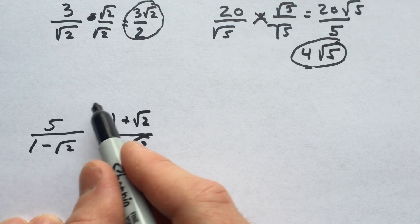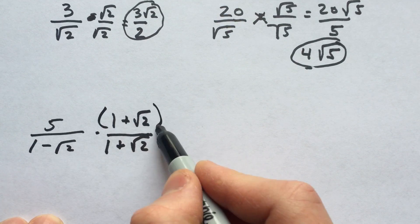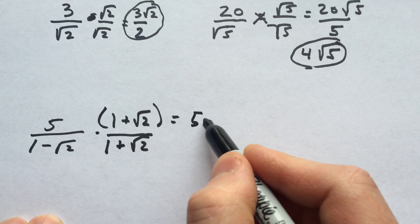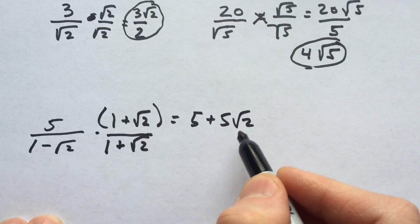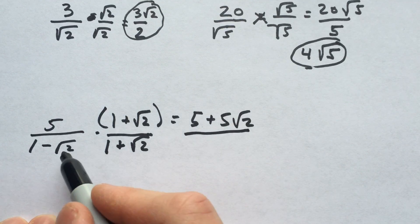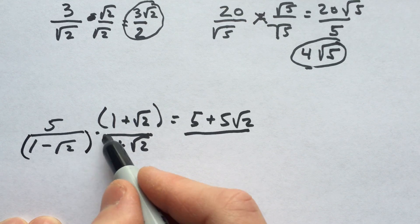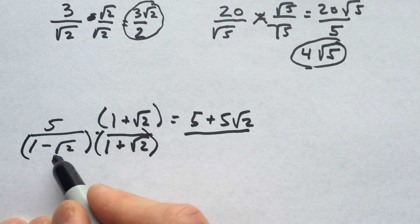So now I'm going to distribute the 5 to the numerator here. That equals 5 plus 5√2. But in the denominator, because this is a binomial and this is a binomial, we can FOIL these together.